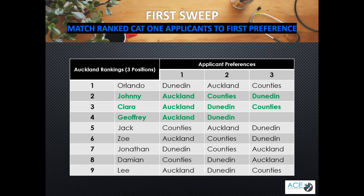We can see that Johnny has preferenced Auckland and therefore he is matched. Kira is matched to Auckland because she has preferenced Auckland first. And Geoffrey is also matched to Auckland as he has preferenced Auckland first and Auckland still has positions. Auckland has now filled all of their positions so the algorithm will move on to the next DHB. If Auckland had five positions, it would match Zoe and Lee as they preferenced Auckland first, and then the algorithm would move on to the next DHB.